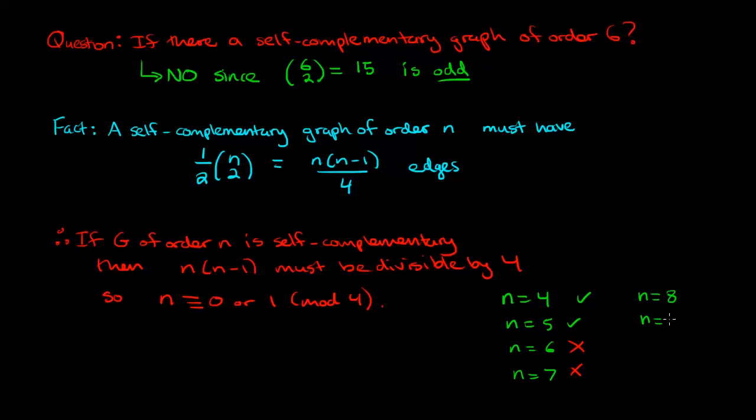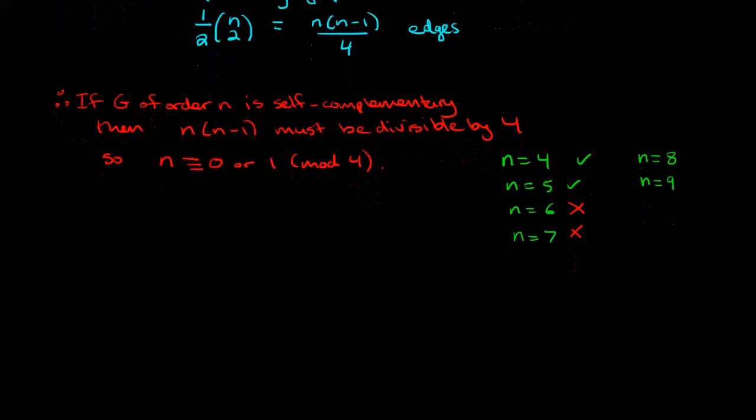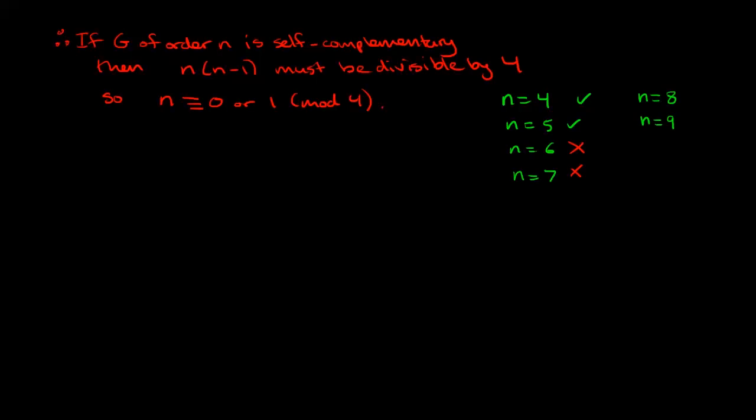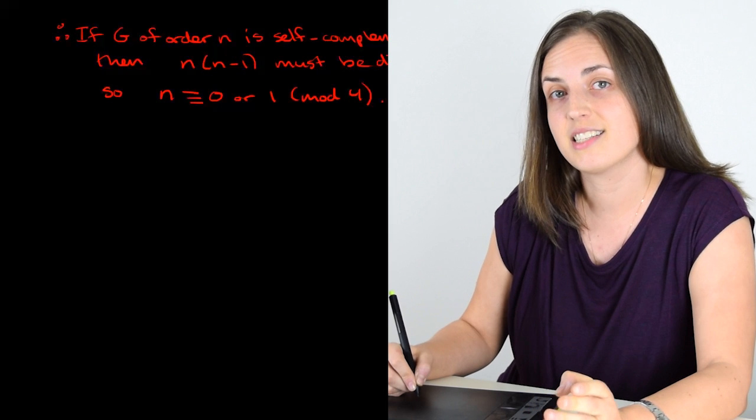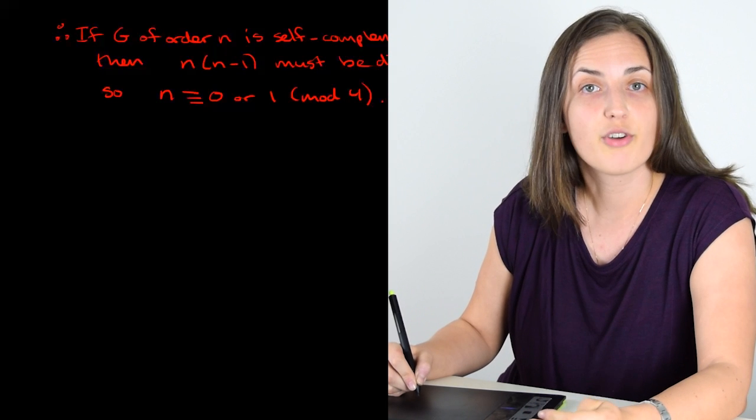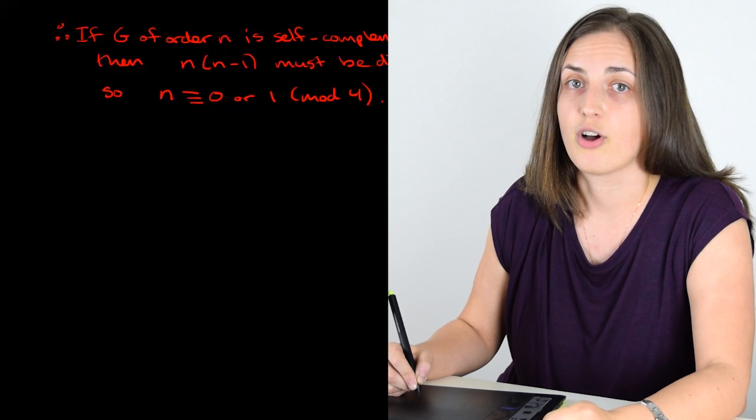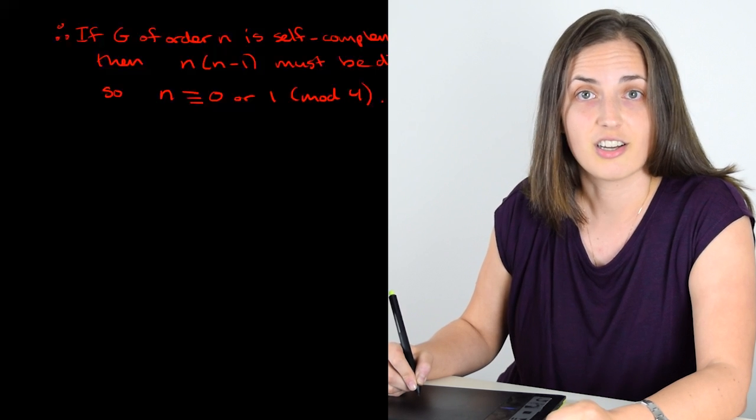Now for n equals 8 and 9, this satisfies the condition. These are congruent to either 0 or 1 mod 4, but right off the bat we don't know the existence of a self-complementary graph of these orders. However, there is a nice algorithm to build self-complementary graphs based on smaller self-complementary graphs. So let's take a look.